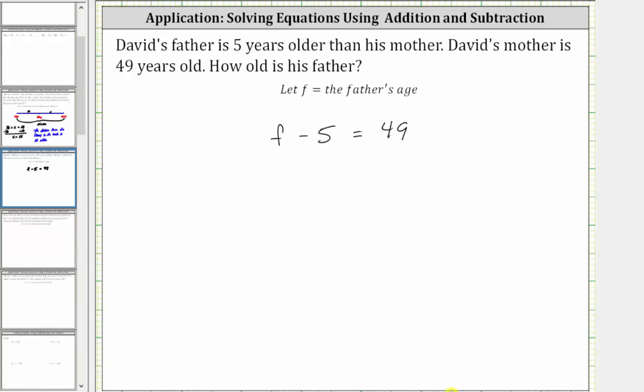And now we can solve the equation for f to answer the question. To solve for f, we need to add five to both sides of the equation.